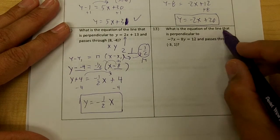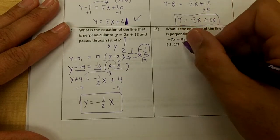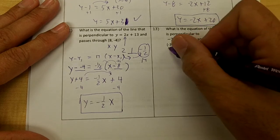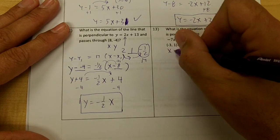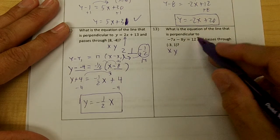And number 13, what is the equation of a line that is perpendicular to 7x minus 8y equals 12 and passes through (-3, 1)? This is my x, this is my y. I don't know my slope.